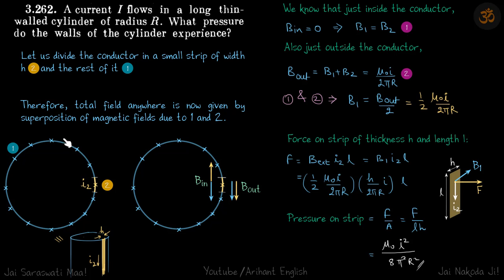Once again, we divided the conductor into two parts: one small strip and the rest of the conductor. From here we got that B outside because of the strip is the total field divided by two. The total field is μ₀I/(2πr).